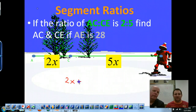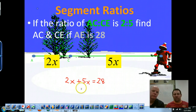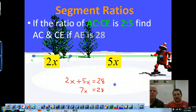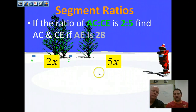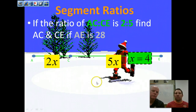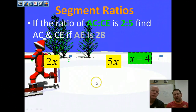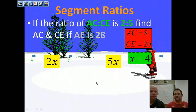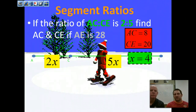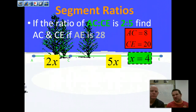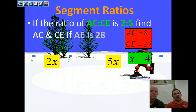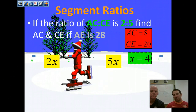We make the equation 2x plus 5x equals 28. That gives 7x equals 28, so x equals 4. But remember, 4 is not the final answer — they wanted to know what AC and CE were. Go back and plug in: 2 times 4 is 8, and 5 times 4 is 20. With segment ratios, look at the pieces, figure out what you're given and what you don't have, and put it together.